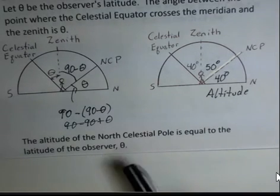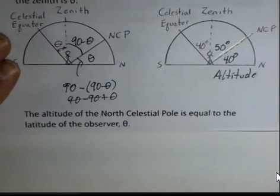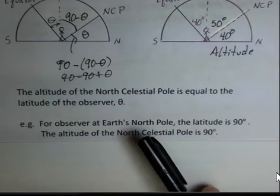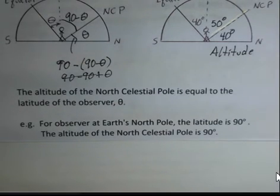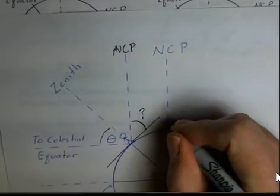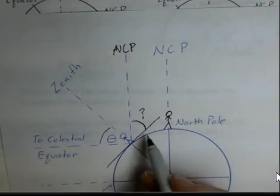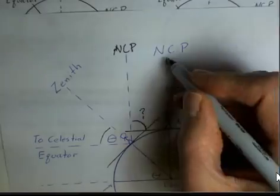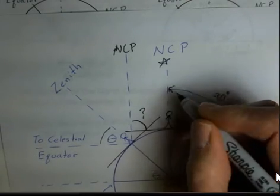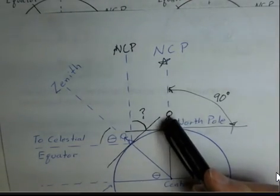Our general conclusion: the altitude of the North Celestial Pole is equal to the latitude of the observer — theta. What about an observer standing at the Earth's North Pole? At the Earth's North Pole, the person's latitude is 90 degrees. What is directly overhead? Overhead is the zenith, and overhead is the North Celestial Pole. How far is the zenith away from the horizon? It's 90 degrees. So the altitude of the North Celestial Pole is 90 degrees, and the person's latitude is 90 degrees — they're 90 degrees away from the equator.